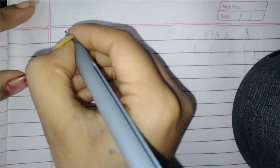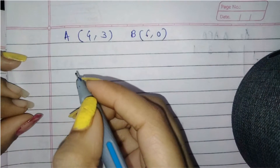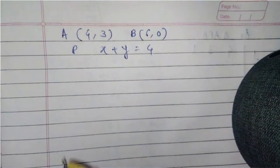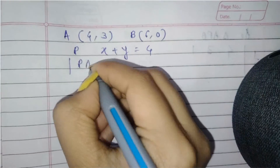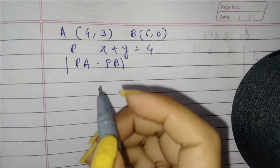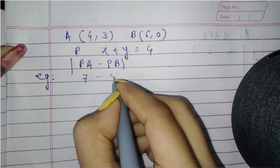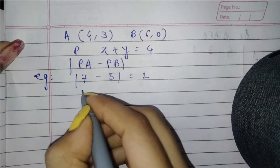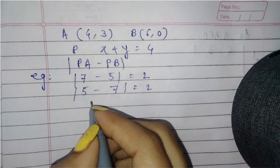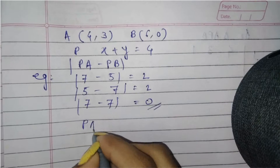To solve the question, we know the coordinates of A which is (4,3) and B which is (6,0). They have given us P which lies on the line x + y = 4, and the condition is that PA - PB should be minimum. PA - PB will be minimum only when PA is equal to PB. For example, if PA is 7 units and PB is 5 units, the difference is 2, but the difference is least only when both are equal. So PA must equal PB.